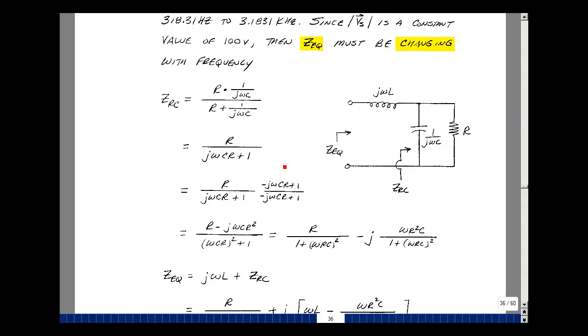The numerator, we have R times 1, and then we have R times minus jωCR, so we get an R squared there.